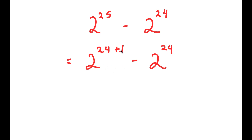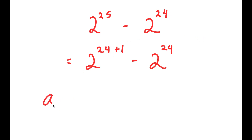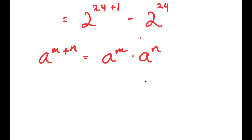The reason I did this is because we want both terms to be the same — we want to have 2 to the power of 24s. The best way of changing 2 to the power of 25 is to rewrite it as 2 to the power of 24 times something. So I rewrite this as 2 to the power of 24 plus 1, and now I can use the property: a to the power of m plus n equals a to the power of m times a to the power of n.